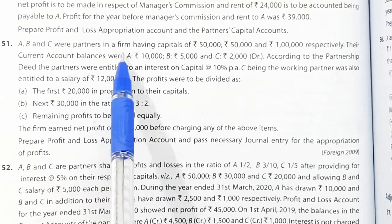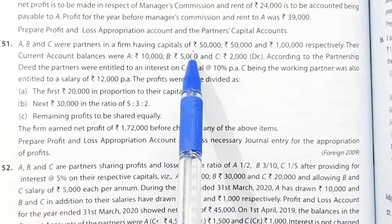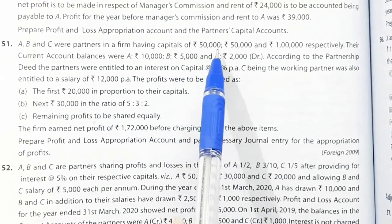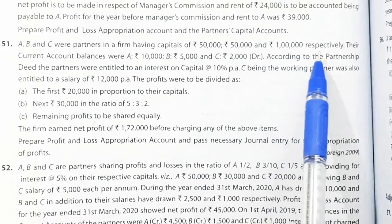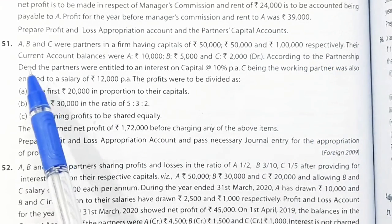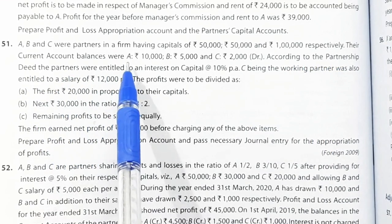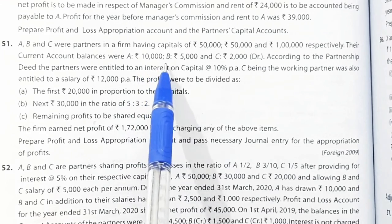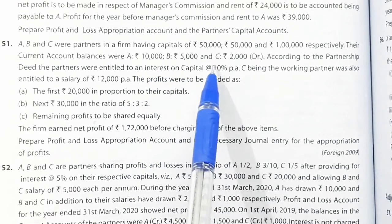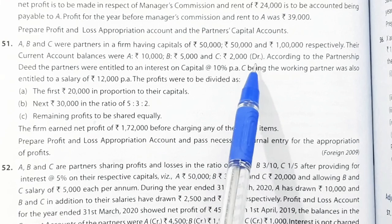A, B and C were partners in a firm having capitals of Rs. 50,000, Rs. 50,000 and Rs. 1,00,000 respectively. Their current account balances were A: Rs. 10,000, B: Rs. 5,000 and C: Rs. 2,000 — a debit balance for C.